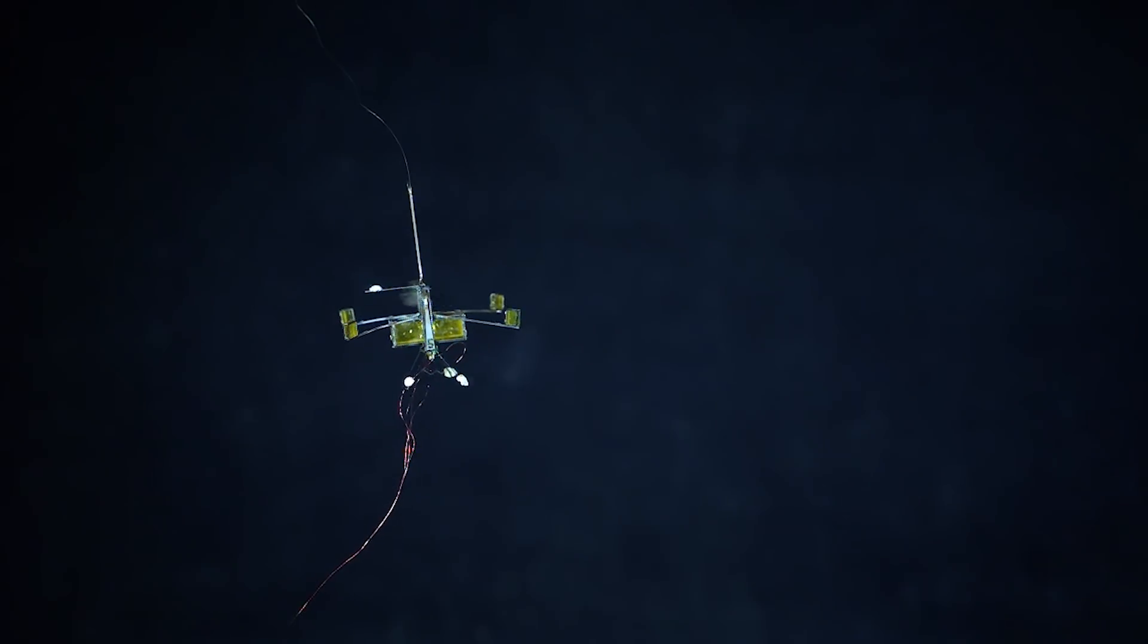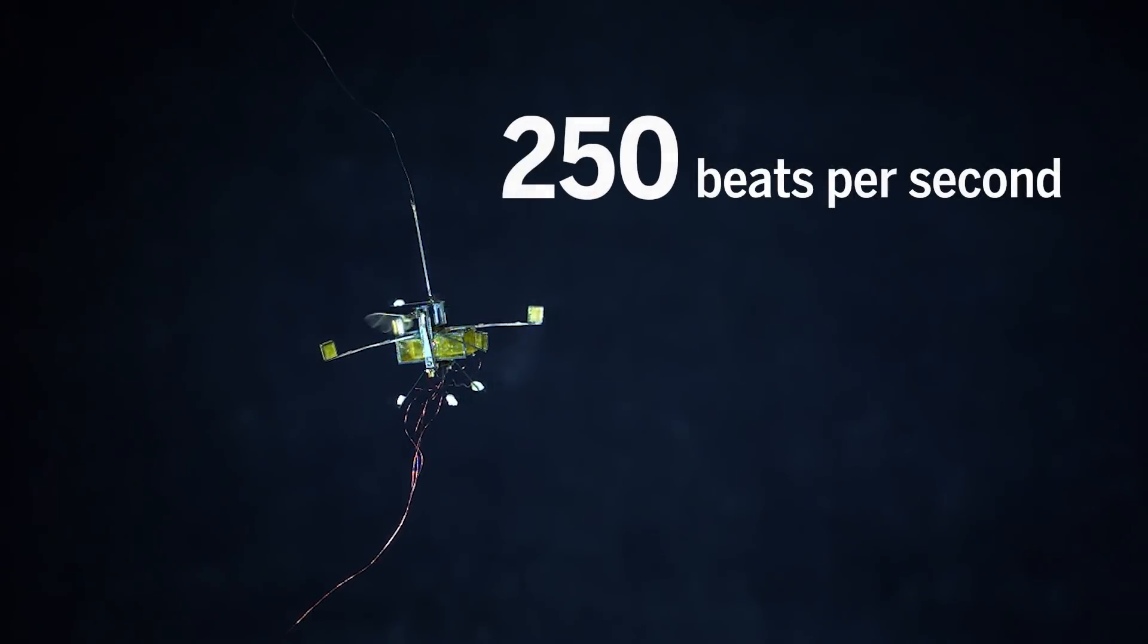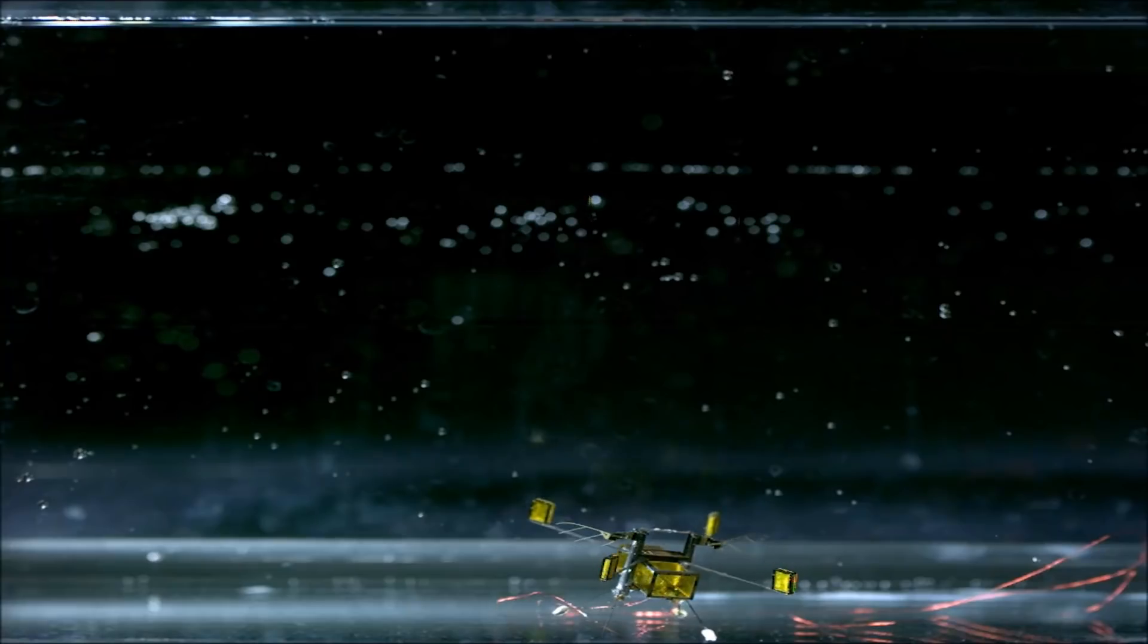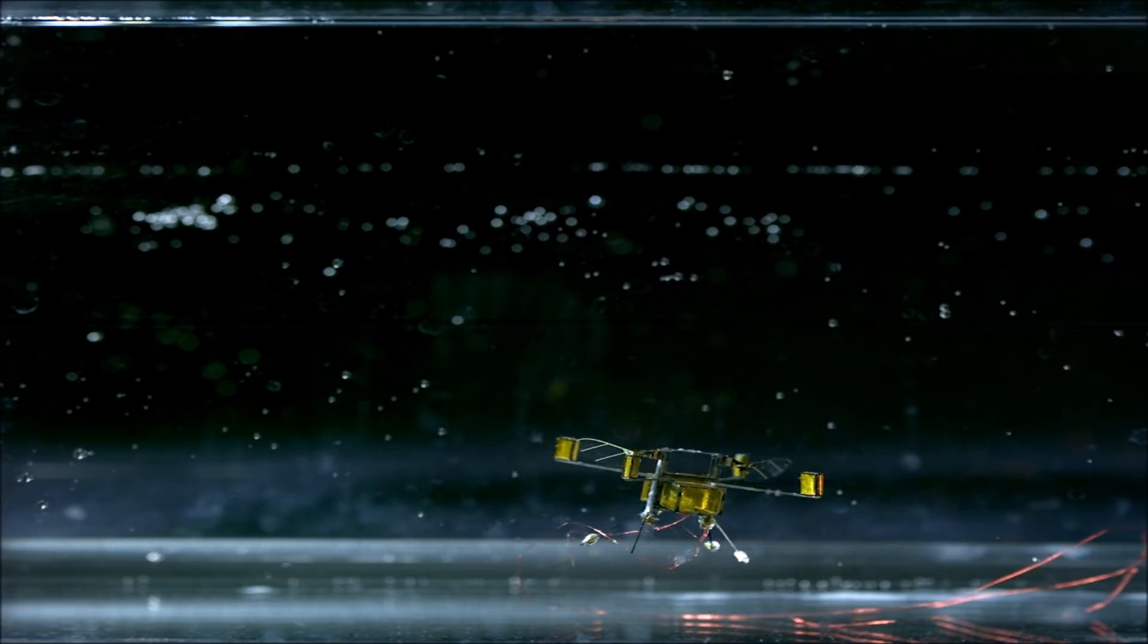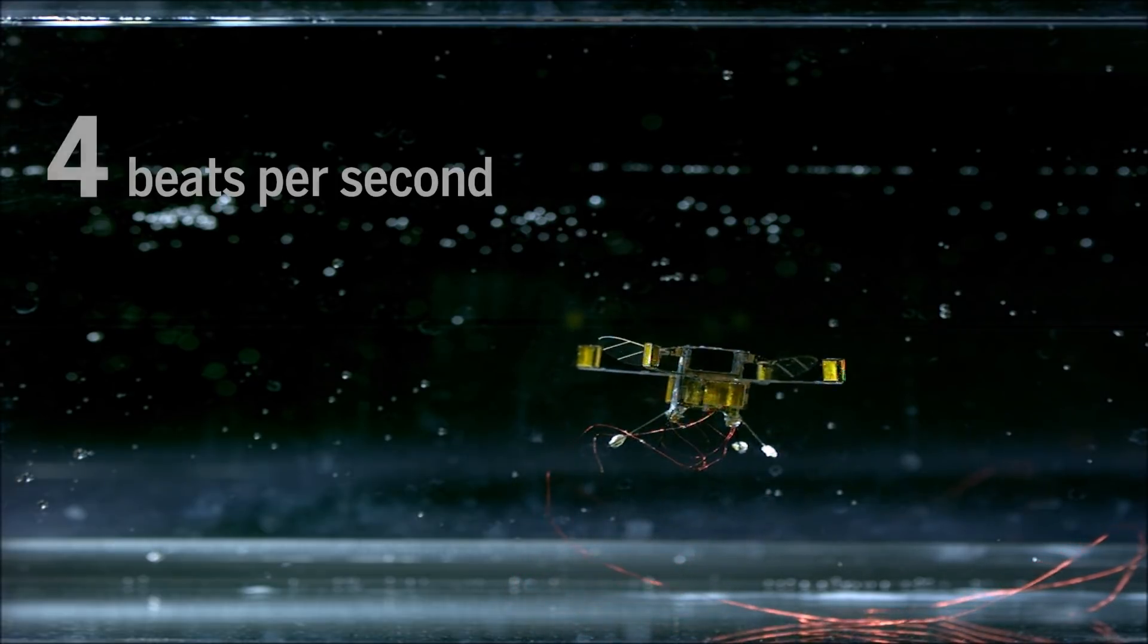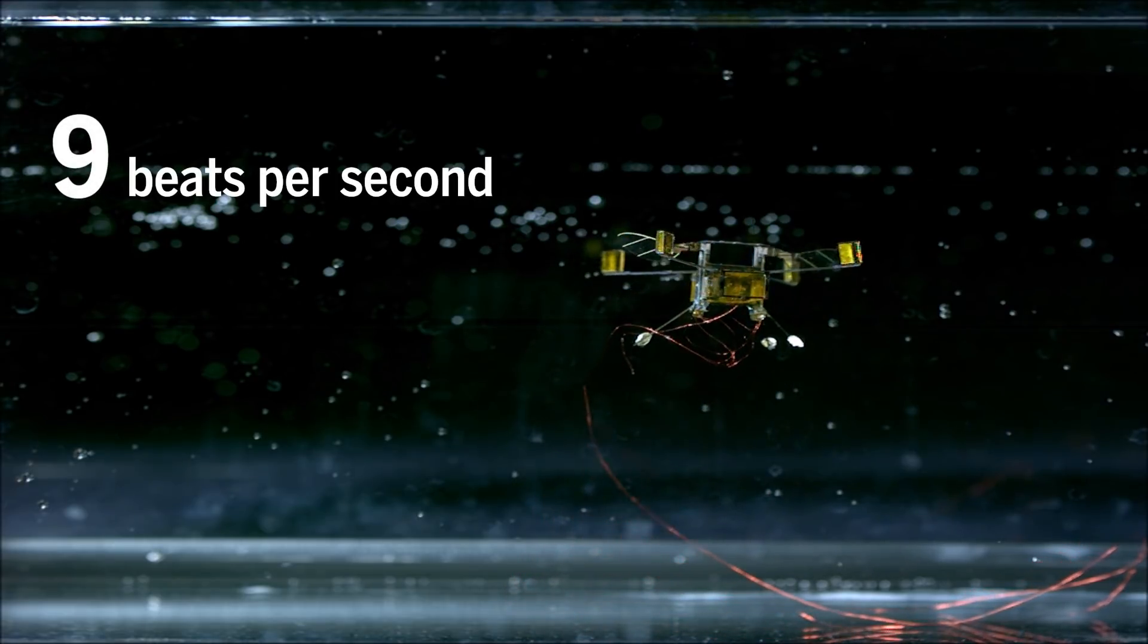When flying, the robot's wings flap about 250 times a second. To keep the robot from spinning around wildly in the water, they slow it down to around 9 beats per second while submerged.